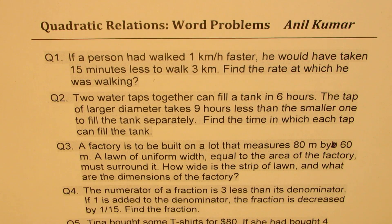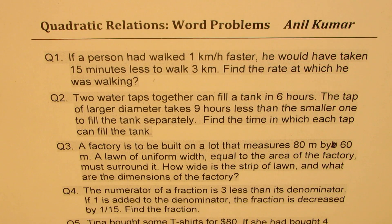Two water taps together can fill a tank in 6 hours. The tap of larger diameter takes 9 hours less than the smaller one to fill the tank separately. Find the time in which each tap can fill the tank. Question three: A factory is to be built on a lot that measures 80 meters by 60 meters.